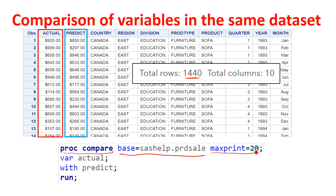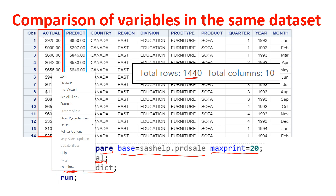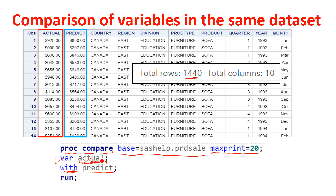In the report I want to print only 20 observations. Now, here we need to provide the name of the variable which we want to compare — the first variable — and with the WITH statement, we will provide the second variable name. So we write VAR for the variable we want to compare, which is actual, and the variable we want to compare it with is the predicted value. With the WITH statement, you put the second variable in and then run the statement.